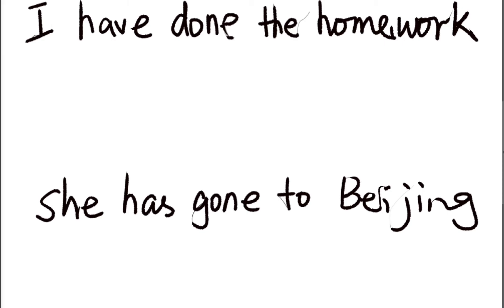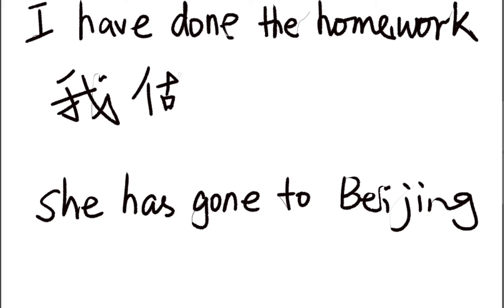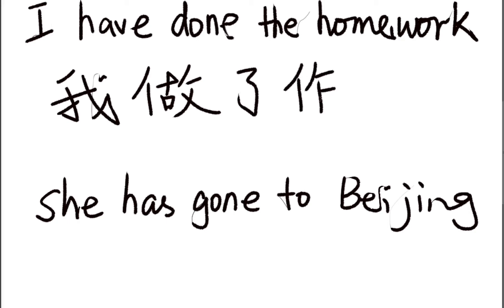Let's look at another situation where 了 would be used. It means something has been completed. For example, 'I have done the homework' — 我做了作业. The 了 after the verb 做 makes it a past complete sentence.